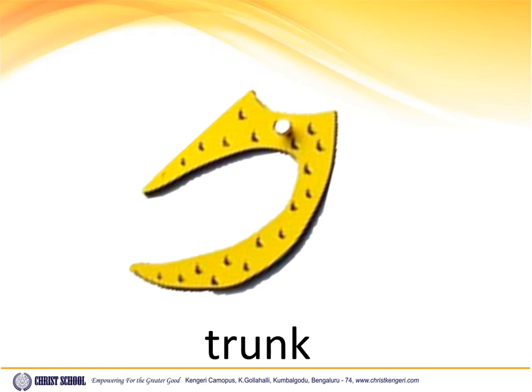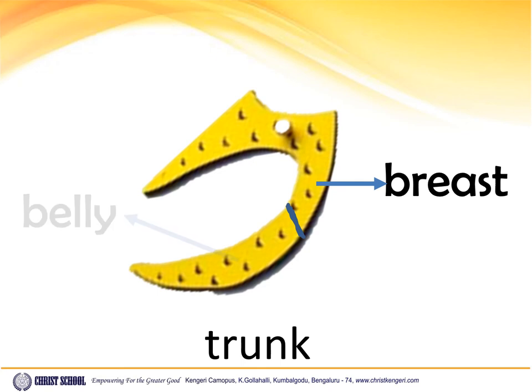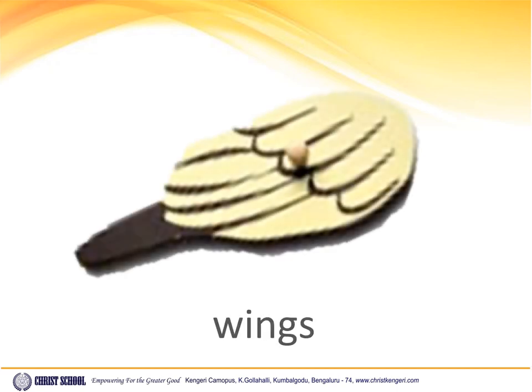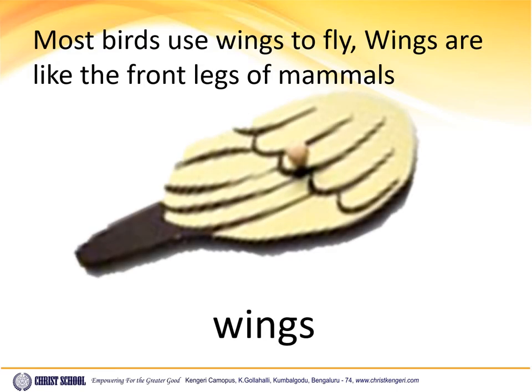The trunk of the bird is divided into two parts. The upper part is called the breast and the lower part is called the belly. Wings. Most birds use wings to fly. Wings are like the front legs of mammals.